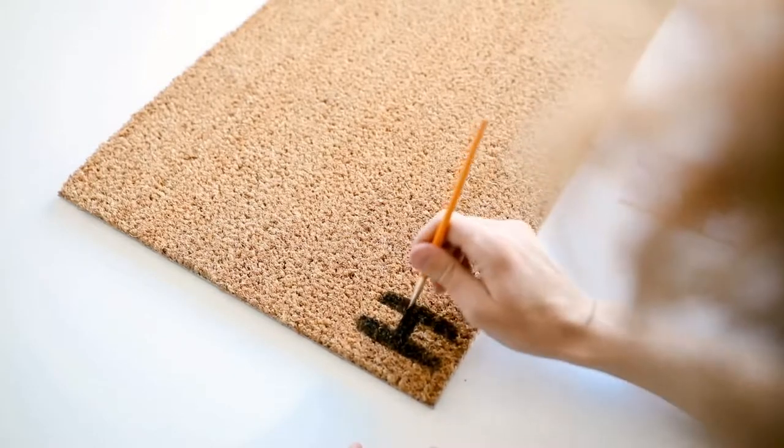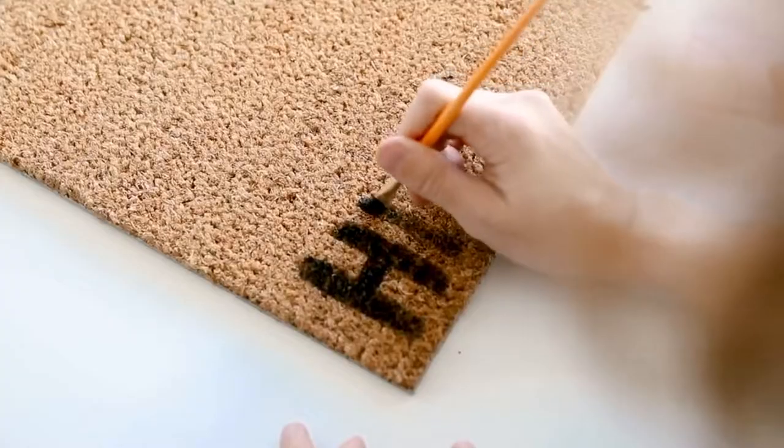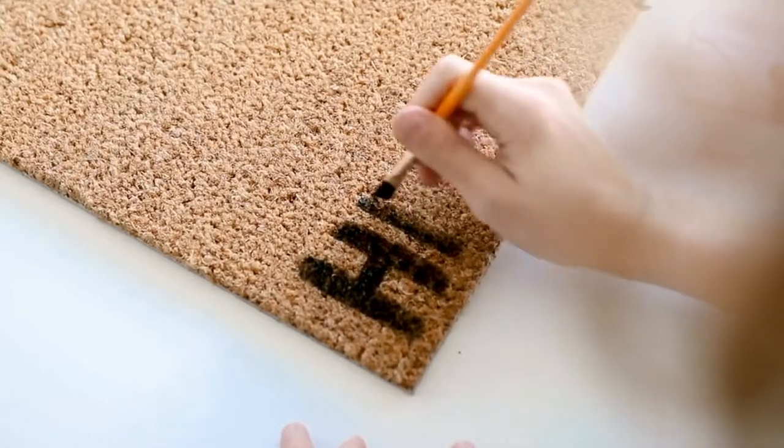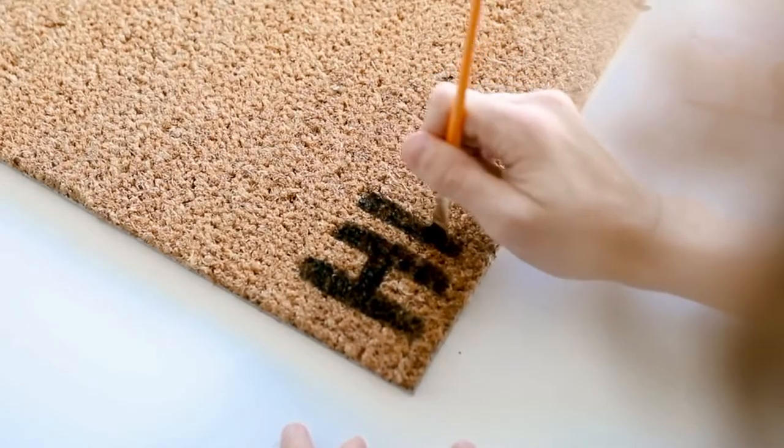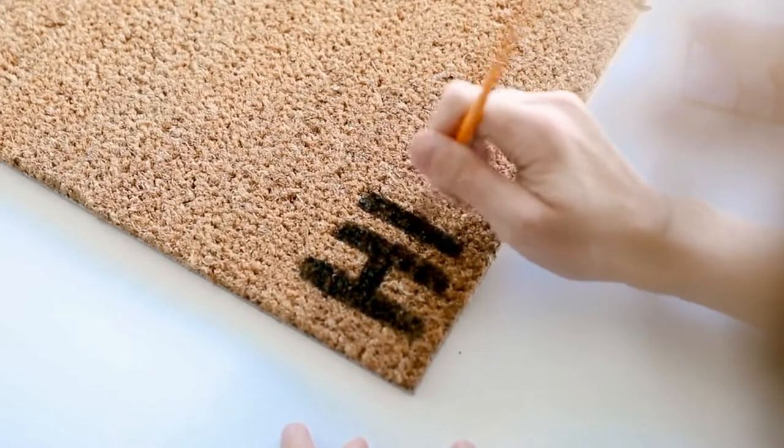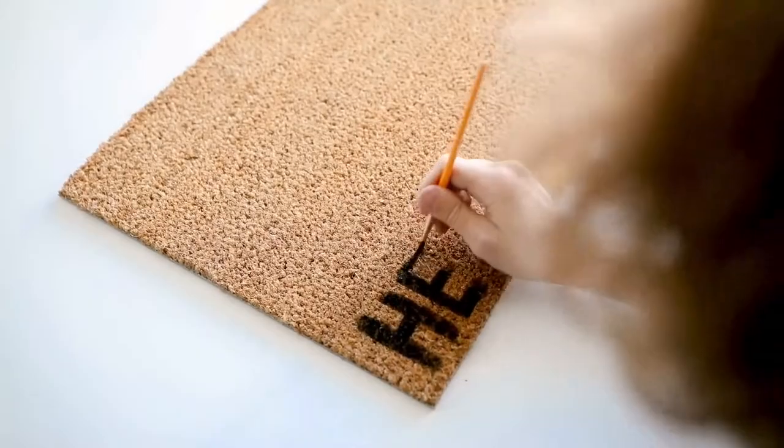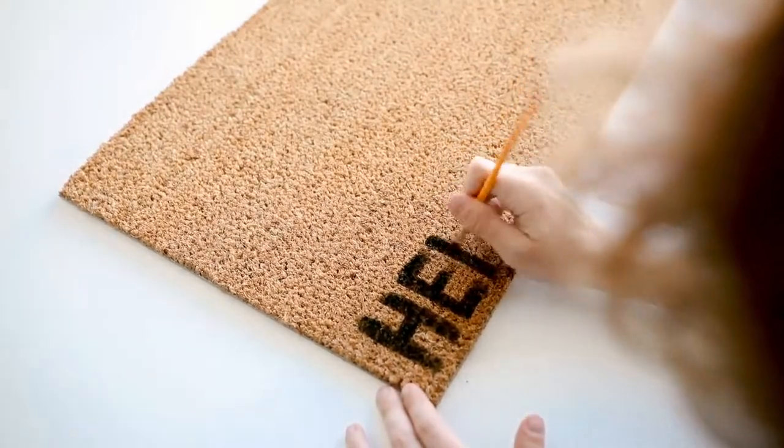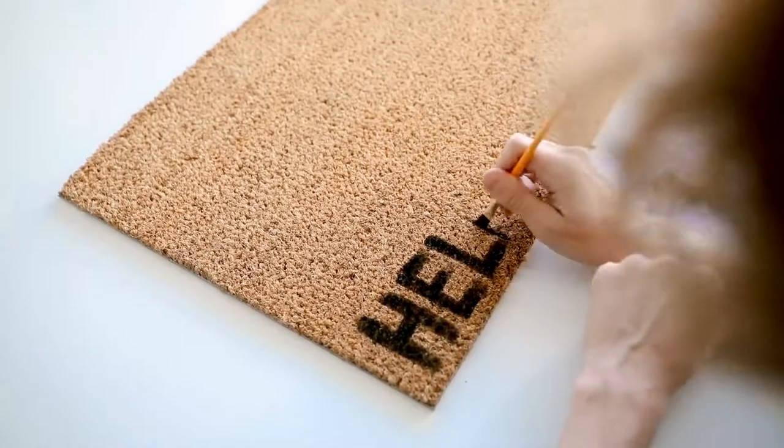Basically what I did was I used a paintbrush and I used the width of the paintbrush to actually do the letter blocking on each letter. So I spelled out the word HELLO in the bottom left hand corner so when someone goes up to your door they're going to be greeted with the word HELLO. I just used my black paint, and with this doormat texture I suggest kind of stippling the paint down into the actual mat.